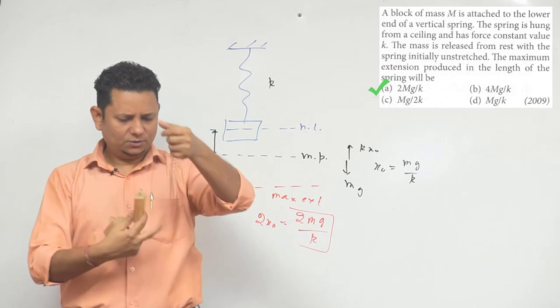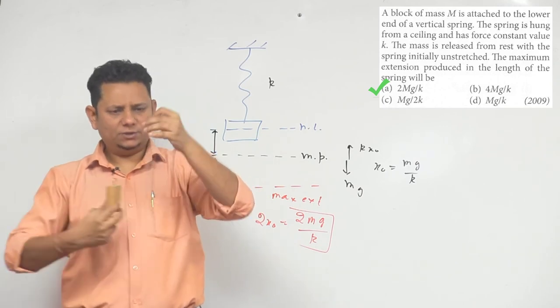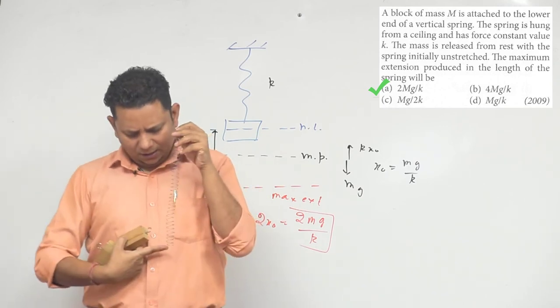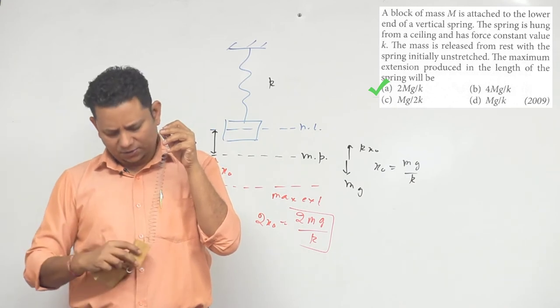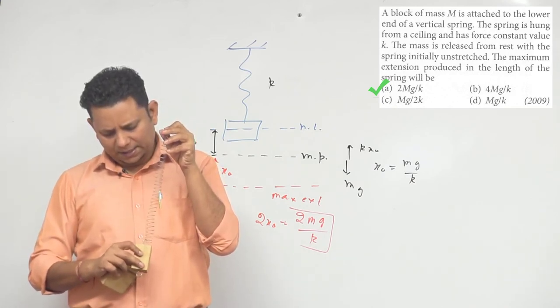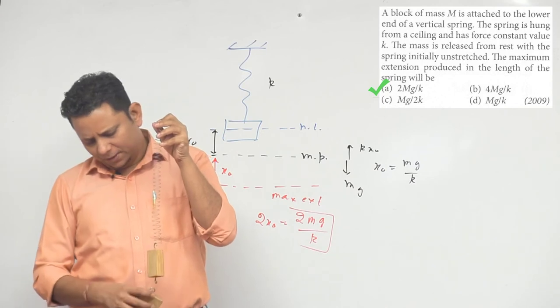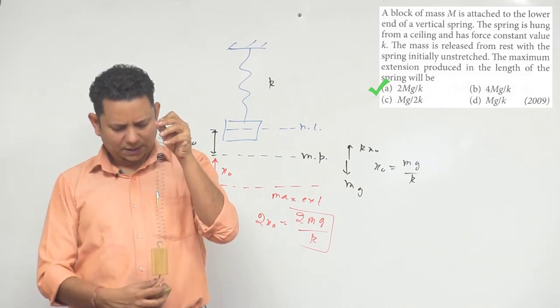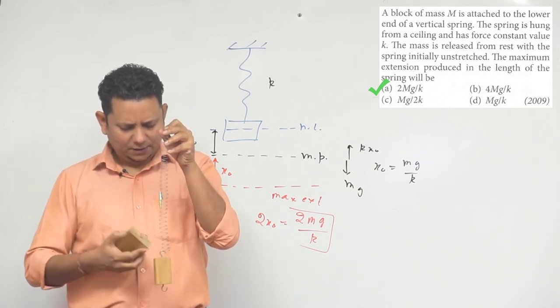So if we consider it here, let us say this is your natural length. Then if we have one block, let us see the other block.